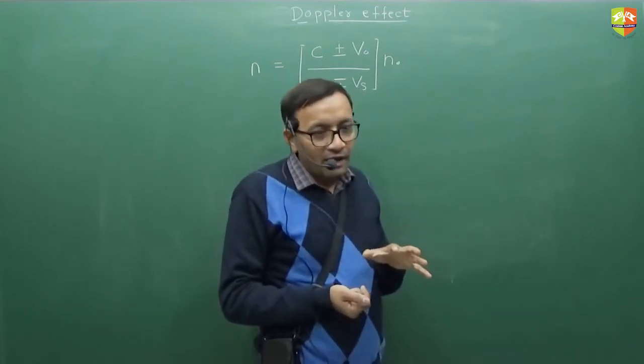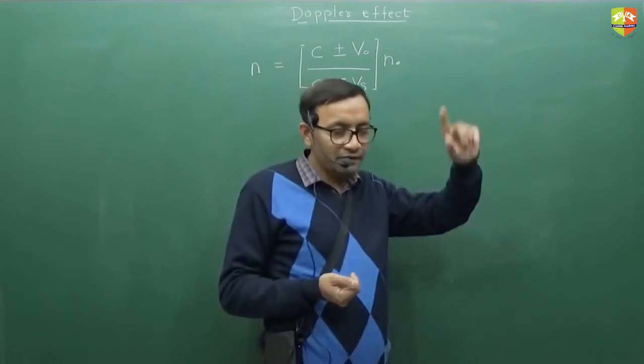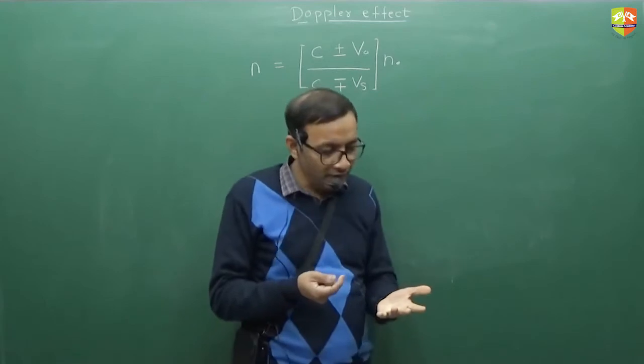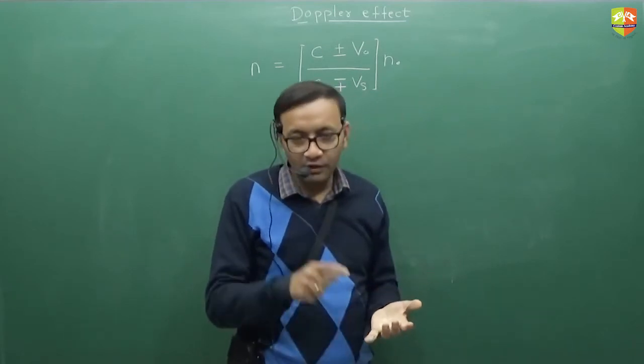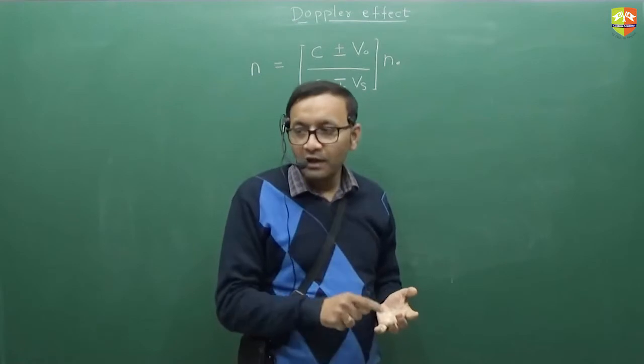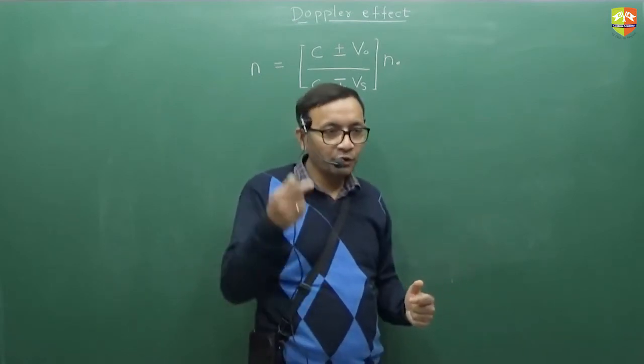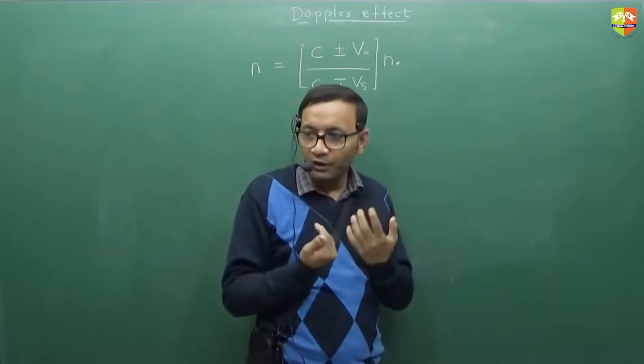Don't remember it like that. Remembering the way we discussed just now will be much better. What we remembered? Velocity of source in the denominator, velocity of observer in the numerator, frequency should go up if they are approaching, frequency should go down if they are going away.